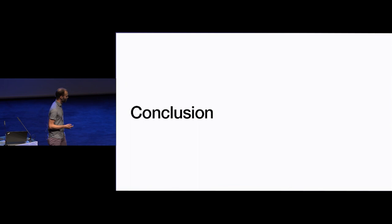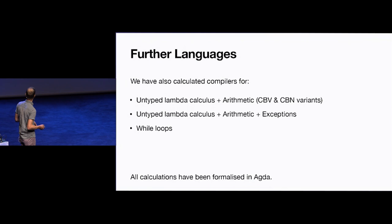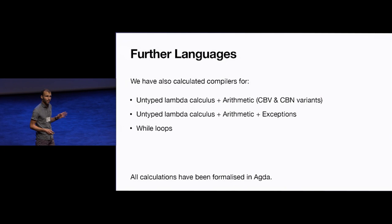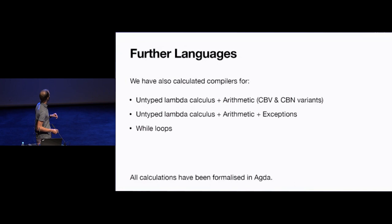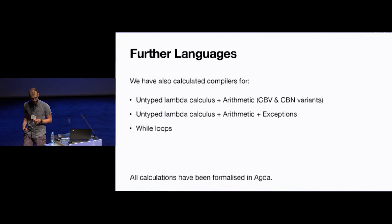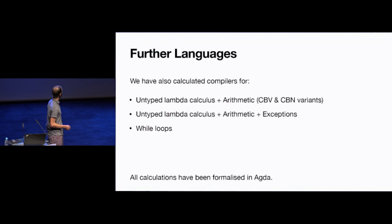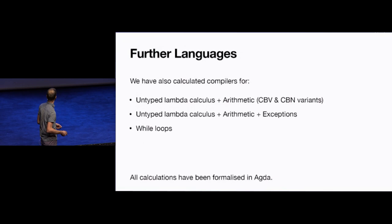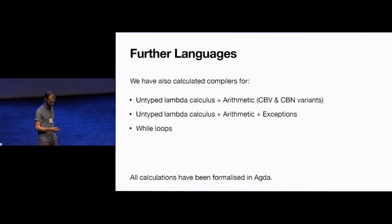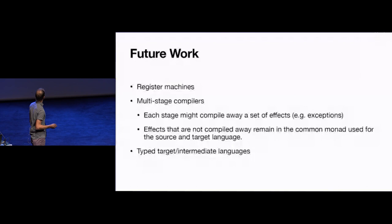That was a toy language, but we also applied this to more interesting languages: lambda calculi in both call-by-value and call-by-name form, a lambda calculus extended with exceptions, and a language with while-loops — all using the partiality monad. We also did this for non-deterministic languages using a language with interrupts, where we extended the partiality monad with non-deterministic effects. All of these calculations have been formalized in Agda.